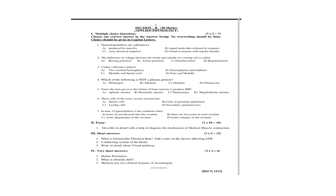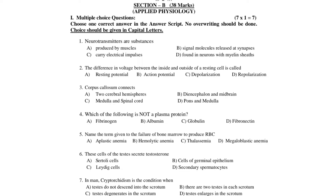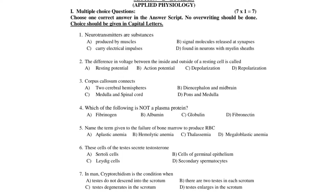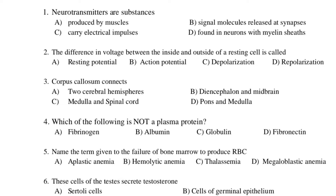Next we move on to Physiology, which is for 38 marks. Here, one extra multiple choice question is added; remaining structure is the same. Answers must be in capital letters, no overwriting. First question: Neurotransmitters — A. Substances produced by muscles. B. Signal molecules released at synapses. C. Carry electrical impulses. D. Found in neurons with myelin sheaths.